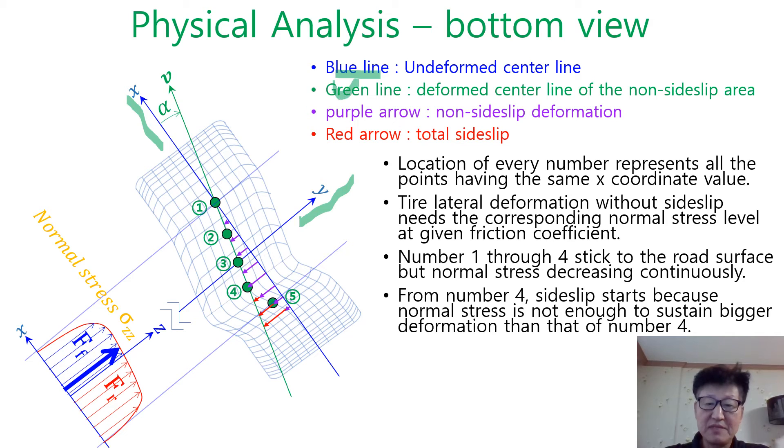Green line is deformed center line of the non-slip side slip area. Purple line, you can see the purple arrow here, it's the non-slip deformation. Red arrow represents the total side slip here.